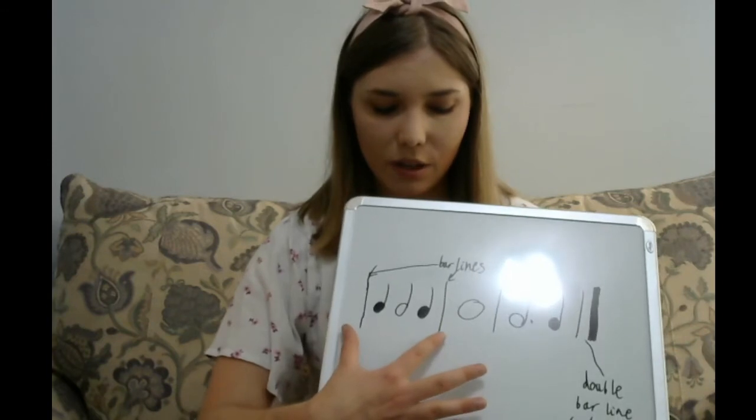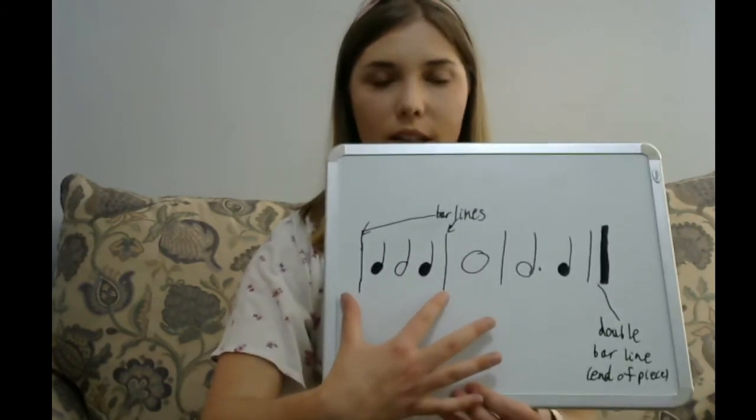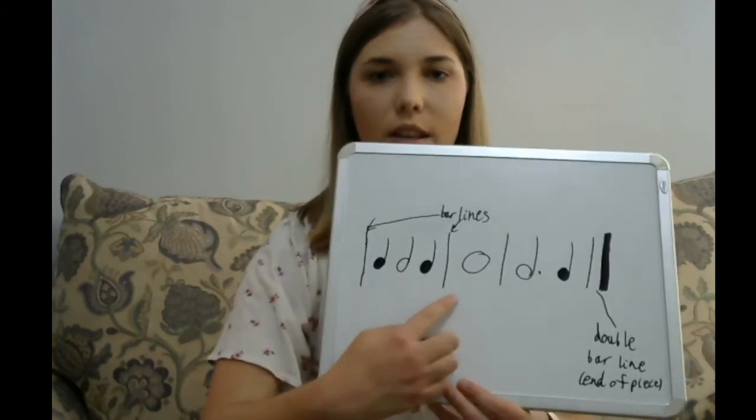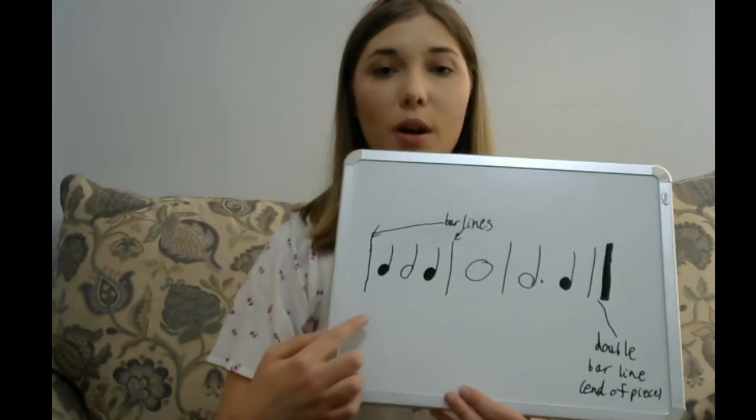A measure is separated by bar lines. When you see a bar line, it doesn't mean to stop playing — you keep going right over the bar line. It just shows you that you have a clear group of beats.